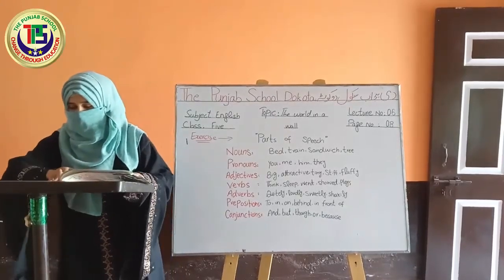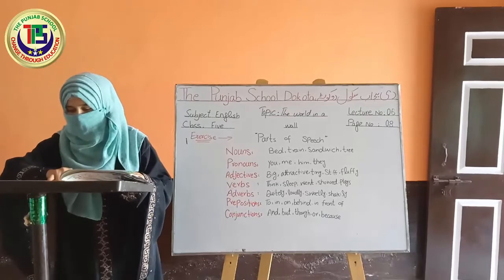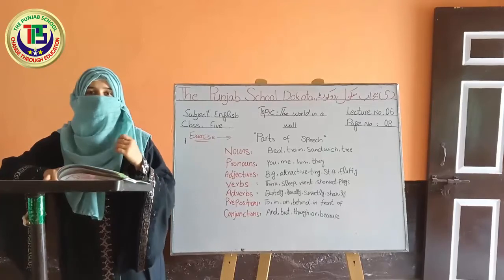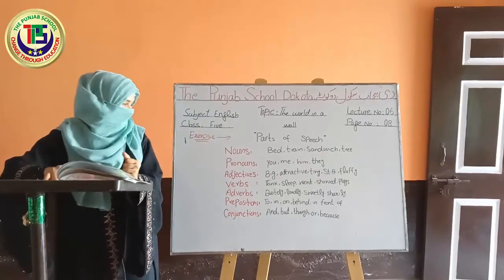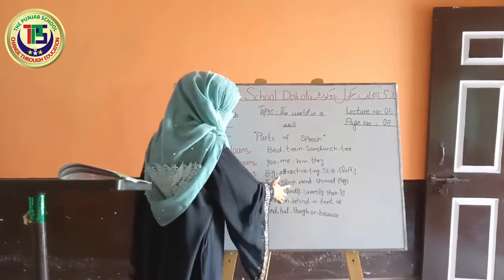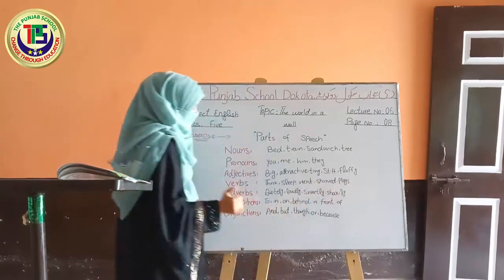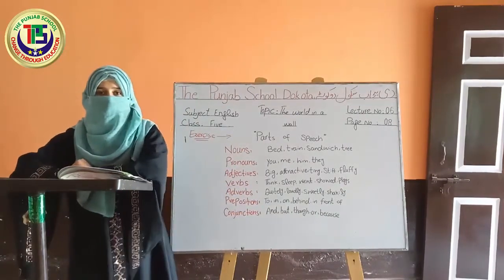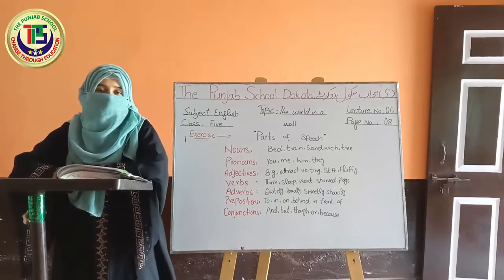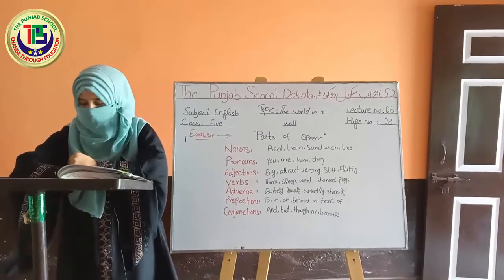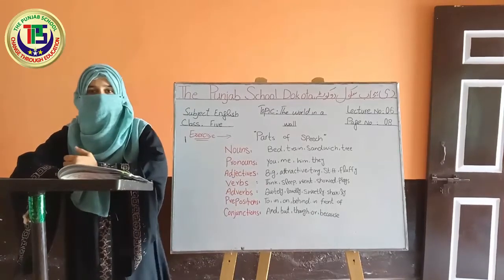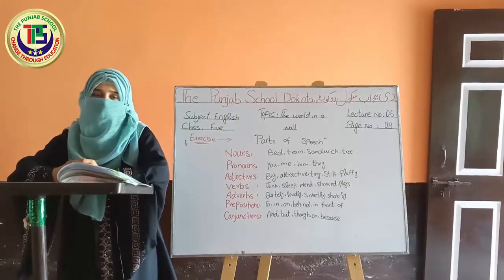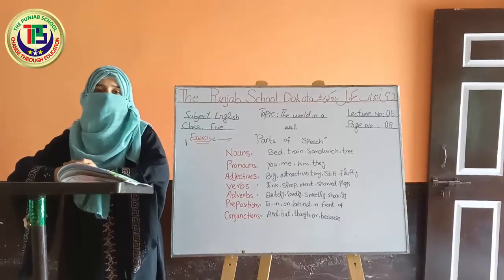Next is verb. A verb is a word used to describe an action, state, or occurrence. یعنی کہ verb کسی بھی action کو یا کسی چیز کے ہونے کو بیان کرتی ہے۔ Verb کی example دیکھیں: think, sleep, went, short, place۔ Verb sentence میں بہت important role play کرتی ہے — اگر verb نہ ہو تو sentence incomplete ہوتا ہے اور ہمیں sentence کی سمجھ نہیں آتی۔